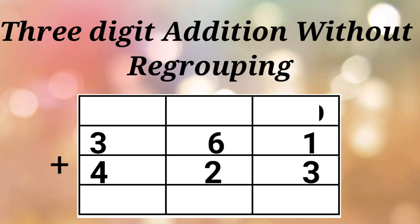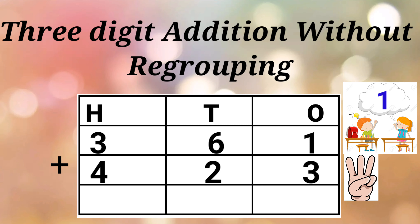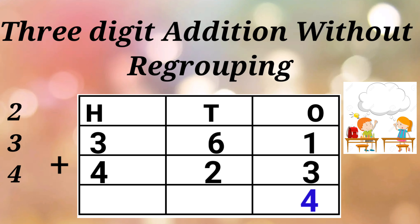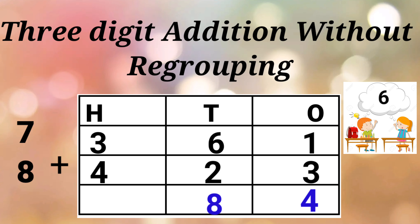1 and 3 is the ones space, 6 and 2 is the tens space, and 3 and 4 is the hundreds space. First we add the ones space. 1 in the mind and 3 in the fingers. 1 after 2, 3, 4. Now we add the tens space. 6 plus 2. 6 in the mind and 2 in the fingers. 6 after 7, 8. So the answer is 8.